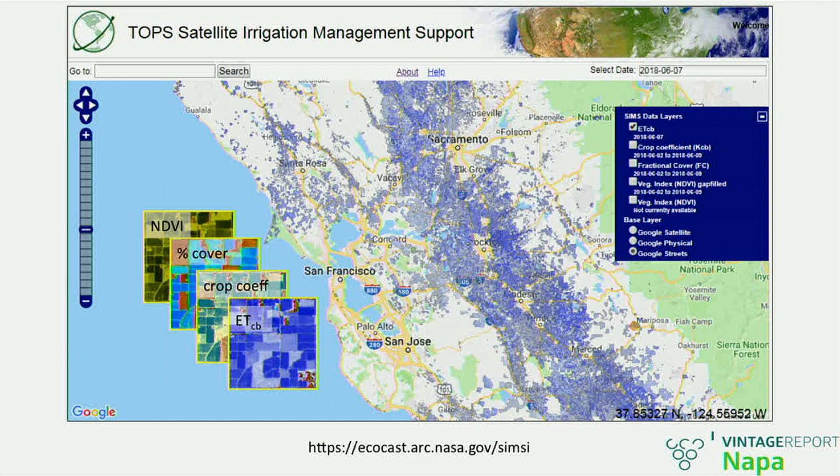Our system looks something like this. Out here is the cascade of four data sets it puts out: the NDVI, the green fractional cover, the basal crop coefficient, and the crop evapotranspiration. It's built on top of the Google API, so it's very easy to search for a given location by name, road intersection, address, or latitude/longitude. Very easy to zoom in on your field. Overlaid in the blue shading is our basal crop evapotranspiration for June 6, 2018. We're currently mapping pretty much all of the Central Valley, the North Coast, and the Central Coast — about 8 million acres altogether.